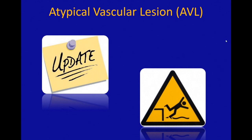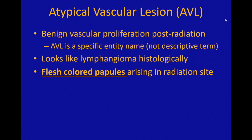Let's talk about AVL, atypical vascular lesion. I don't really love this name because this lesion is not really that atypical. The name sounds like it's a descriptive diagnosis rather than an actual specific entity name, which I think confuses a lot of people. What this is is a benign vascular proliferation that arises in the setting of radiation.